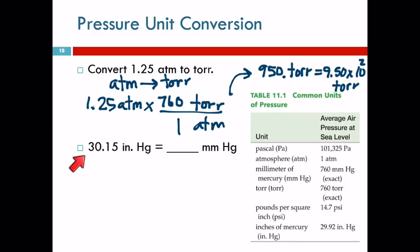Let's do this one. 30.15 inches of mercury is how many millimeters of mercury? 760 millimeters of mercury is equal to 1 atmosphere, and it's equal to 29.92 inches of mercury. You can do this using the pressure units. You could also do this by just converting inches to millimeters. So whichever way makes more sense to you.